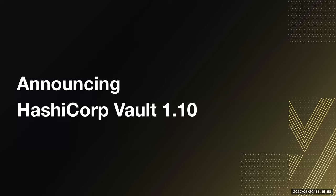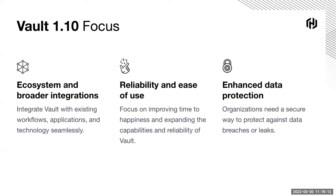That's a quick overview for folks without much background on HashiCorp or Vault. Now I want to transition into what happened with Vault 1.10. We focused on three core areas: ecosystem integrations — making Vault talk to things better — so in this release you'll see things like the updated Terraform provider and the updated AWS Lambda extension.